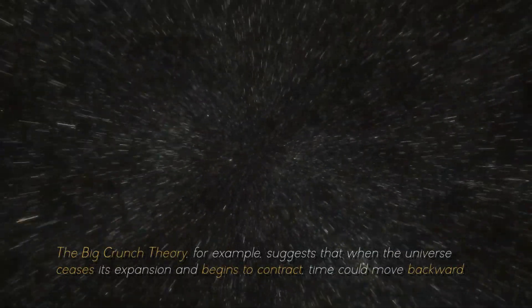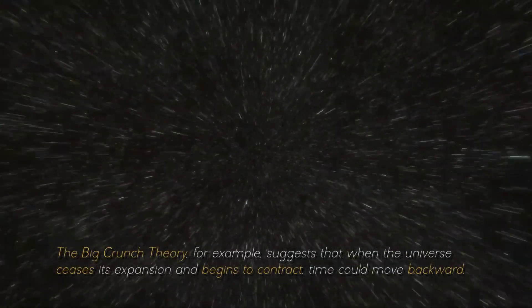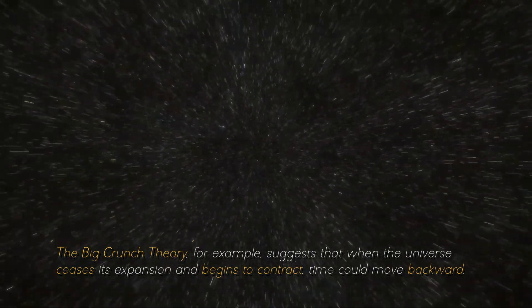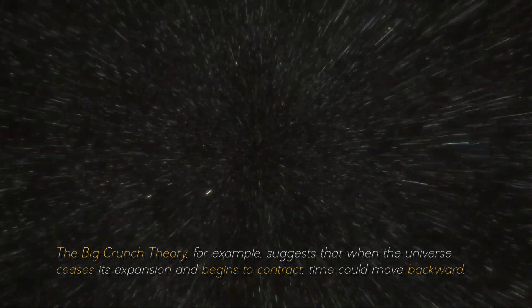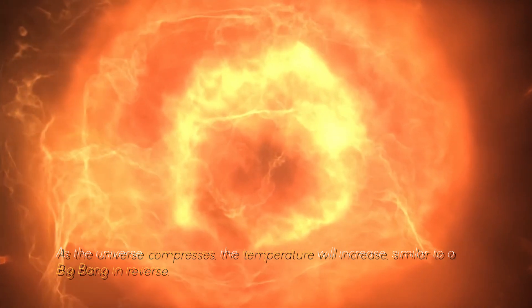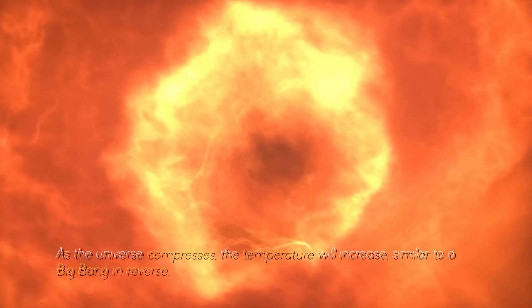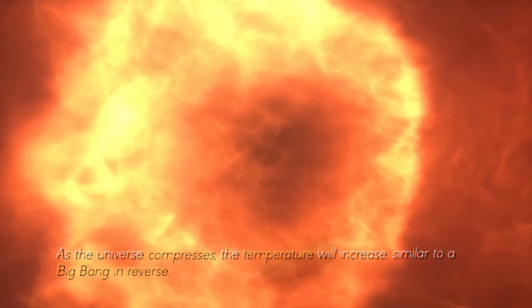The Big Crunch theory, for example, suggests that when the universe ceases its expansion and begins to contract, time could move backward. As the universe compresses, the temperature will increase, similar to a Big Bang in reverse.